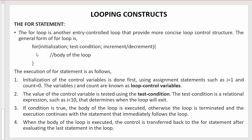The for loop starts with the keyword 'for' followed by three segments: initialization, test condition, and increment or decrement. Then the body of the loop gets executed.